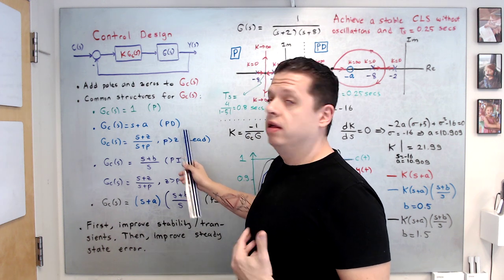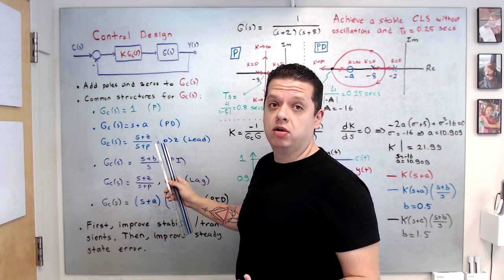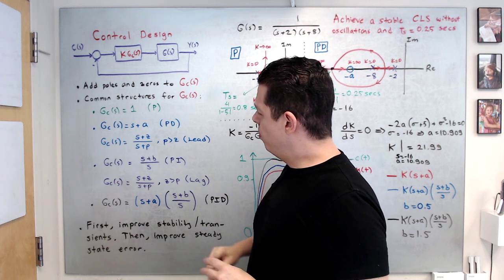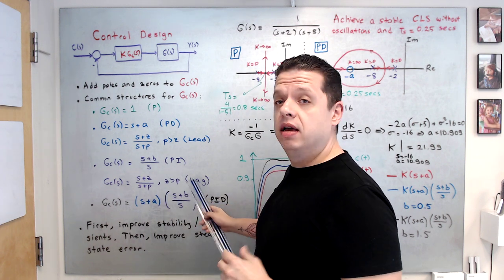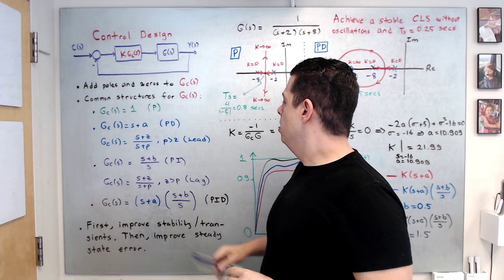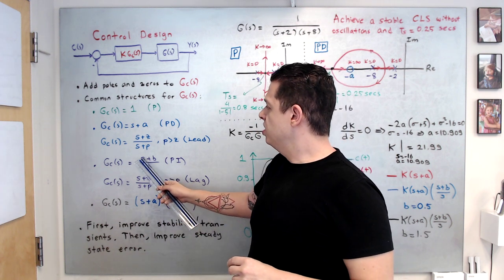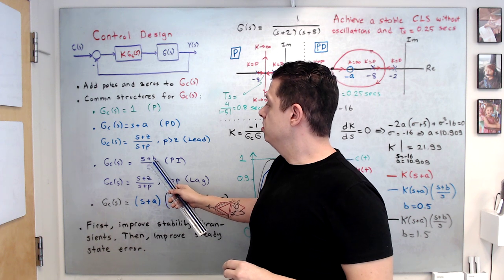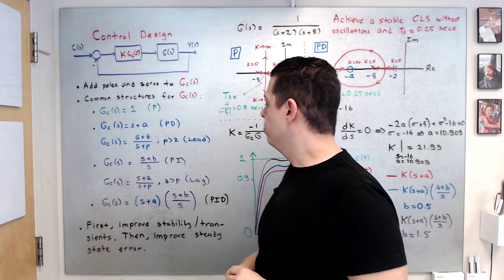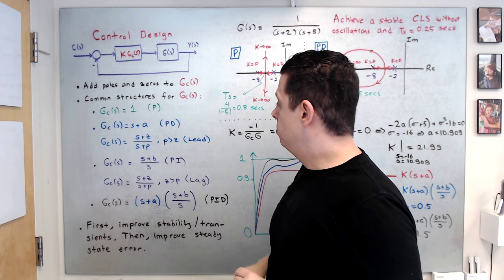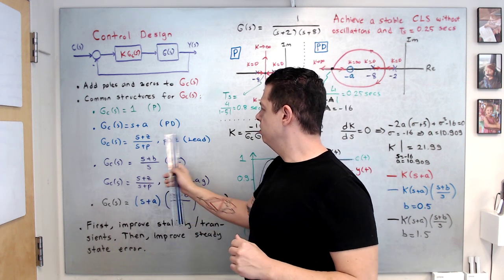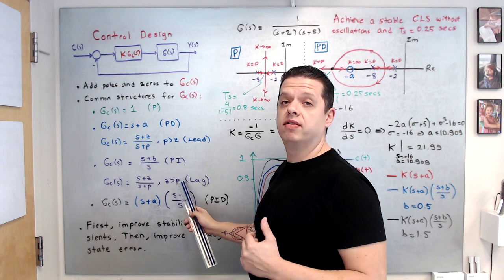P and lead won't do anything to minimize your steady-state error. Other types of controllers are PI and lag — PI and lag can improve the steady-state error. PI has the structure (s+b)/s, where you choose b in addition to gain k. A lag compensator is very similar to the lead compensator, but z is greater than p.